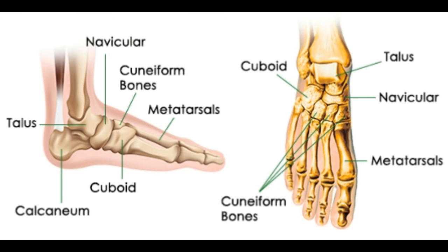Phalanges — the bones situated in the toe region are known as phalanges. Every human foot has 14 phalanges. Other than the big toe, the structure of all the toes is the same, with three phalanges normally: proximal phalanx, middle phalanx, and distal phalanx.